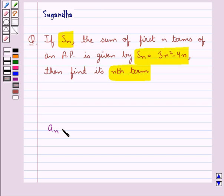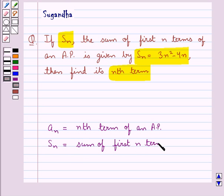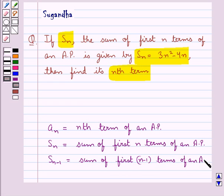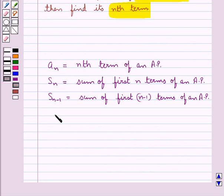Now if we have A_n be the nth term of an AP and S_n is the sum of first n terms of an AP and S_(n-1) is the sum of first (n-1) terms of an AP, then we have the nth term A_n = S_n - S_(n-1).